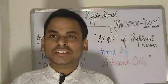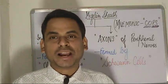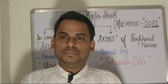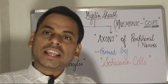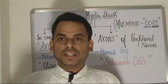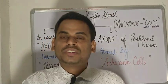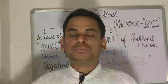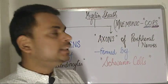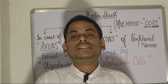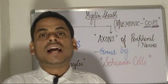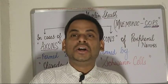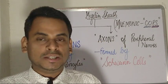Welcome to the human anatomy series. Today the topic of discussion will be about the myelin sheath. As you must be familiar, neurons are composed of the cell body or cyton, and extending from the cyton is the axon. There are basically two types of neurons: myelinated and non-myelinated. Today's focus will be on the myelin sheath of myelinated neurons.